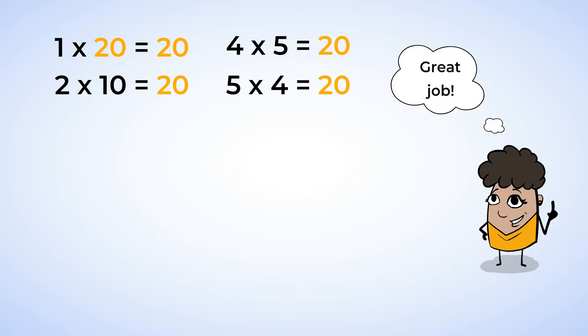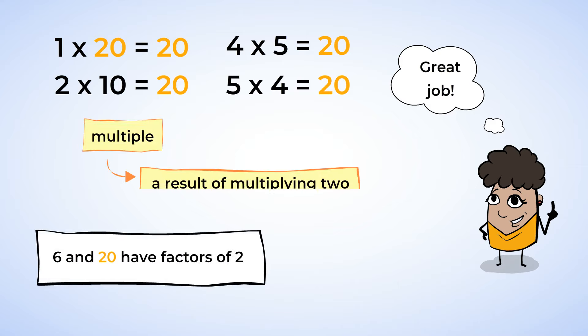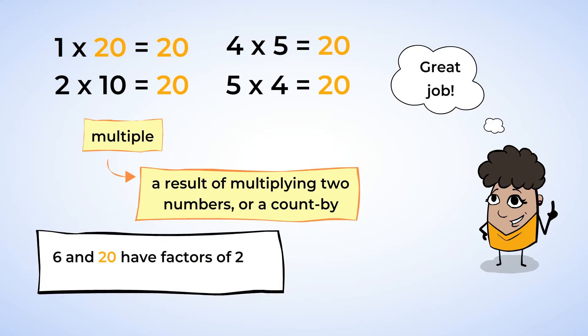So far, we've seen a couple of numbers that have 2 as a factor. Both 6 and 20 have factors of 2, and this is because 6 and 20 are multiples of 2. A multiple is a result of multiplying two numbers, or a count by. When you skip count, you are listing all of the multiples of the number you are skipping by.